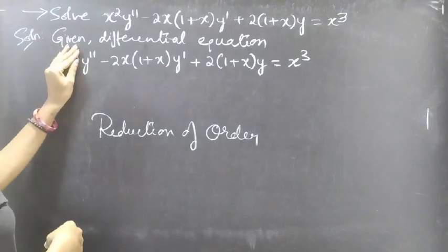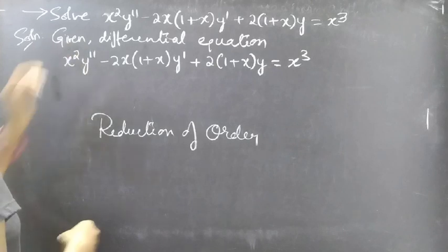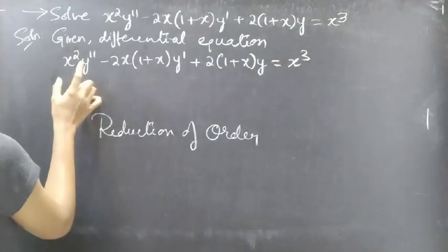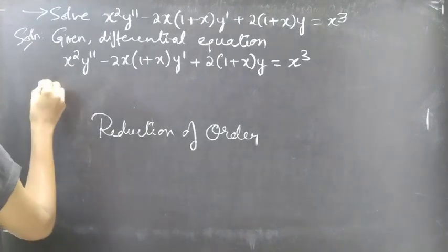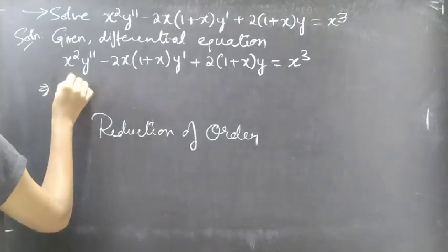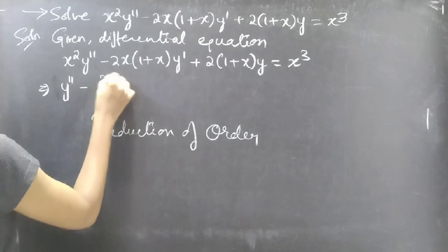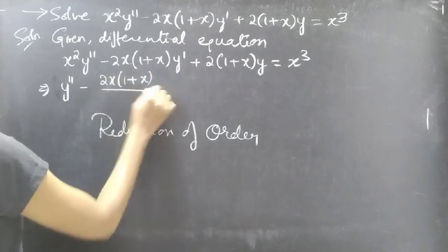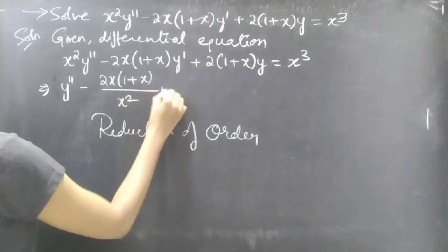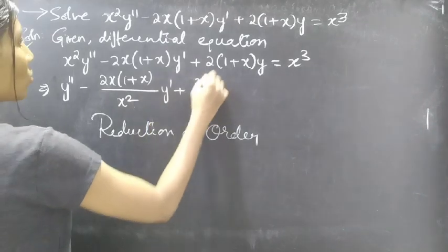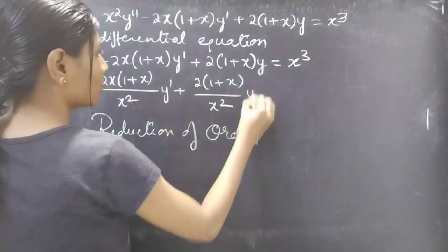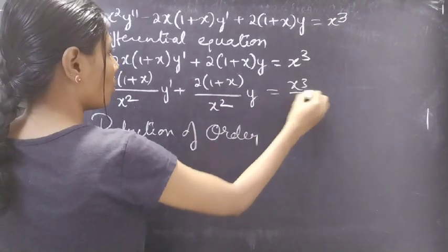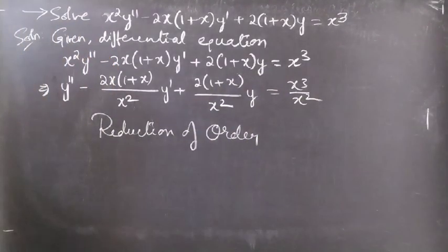Now make the coefficient of y double dash equal to 1 by dividing both sides of the equation by x squared. Then we will get: y double dash minus 2x times (1 plus x) over x squared times y dash plus 2 times (1 plus x) over x squared times y equal to x cubed over x squared.